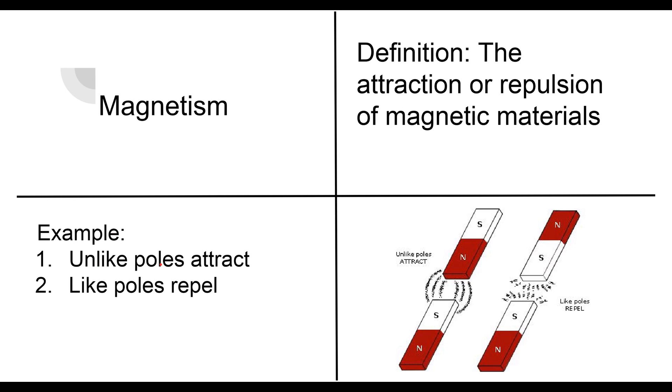So our example is, unlike poles attract, like poles repel. So you know, if you've ever played with magnets, if you put the north side and the south side, which we'll talk about, the N and the S together, they're going to attach. If they're the same, then they're going to push away.